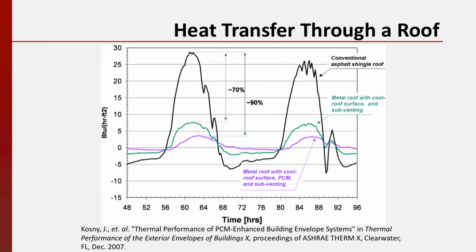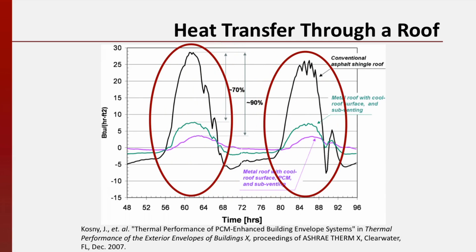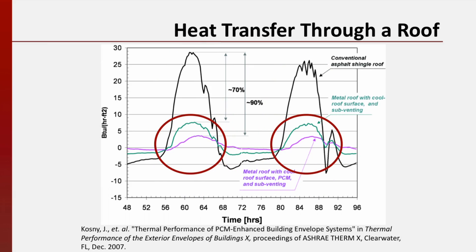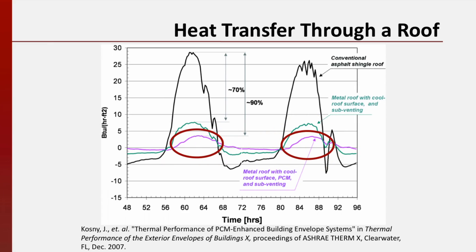Now let's look at the measured performance of a similar type of phase change insulation installed on a typical residential roof. The chart here shows heat transfer into a house on the vertical axis and time on the horizontal axis. The two large black peaks, which occur during two consecutive summer days, correspond to the large amount of heat transfer a conventional roof allows. The smaller green peaks show how changing the roof surface material and venting the attic significantly lower heat transfer into a home by approximately 70%. The purple curve shows that if phase change insulation is used in addition to these roof modifications, we can reduce the required cooling energy by 90%.